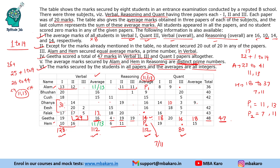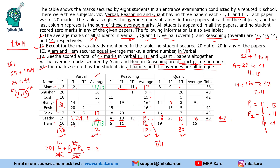There is one missing number for Falak in Reasoning. Using that: 9 plus 15 is 24, plus 32 is 56, plus 14 is 70. So 70 plus Falak's total plus P1 plus P2 must equal 112. This means P1 plus P2 could be 18 or 24. If P1 plus P2 equals 18, Falak's total would have to be 24, which is impossible since the maximum average is 20. Therefore P1 plus P2 must equal 24, making Falak's Reasoning total 18.